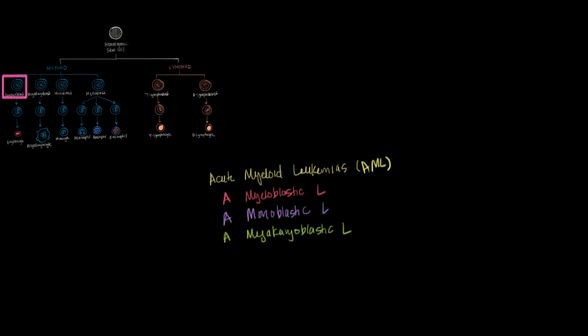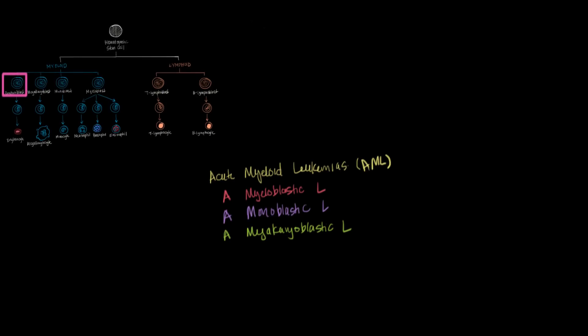And you could actually get a leukemia, an acute myeloid leukemia developing from an erythroblast. But that's so extremely rare that you won't really hear people talk about it. It doesn't really happen in the real world. But it's good to know that it's possible theoretically. So those are all of the different types of acute leukemias. Now we're ready to talk about the chronic leukemias.